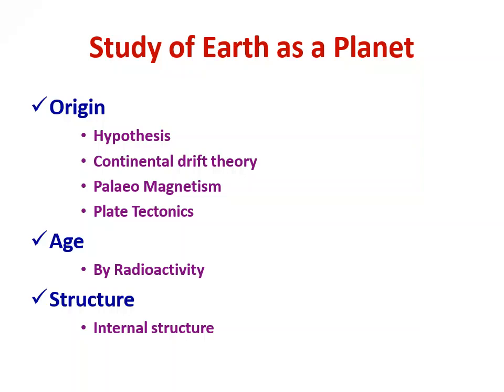When we say we will be studying about its origin, what points will we be covering? We will be covering hypothesis — these are the researches done by scientists previously right from the beginning of earth, that is the evolution of earth. Then we will be studying about the continental drift theory — how the seven continents were formed and what drift occurred. These things were studied by a scientist called Wegener, and those theories we will be studying.